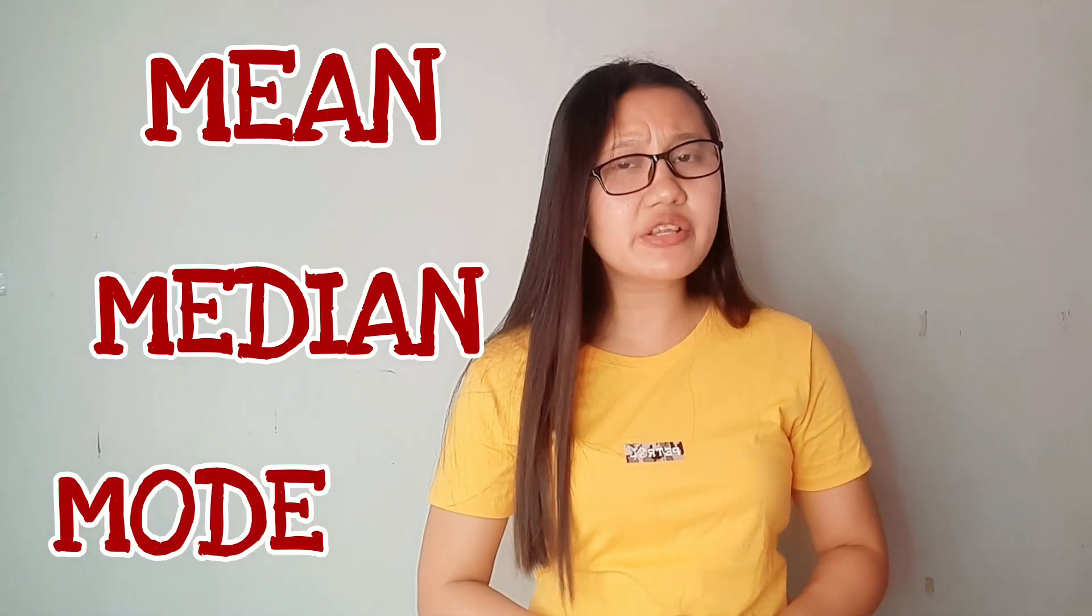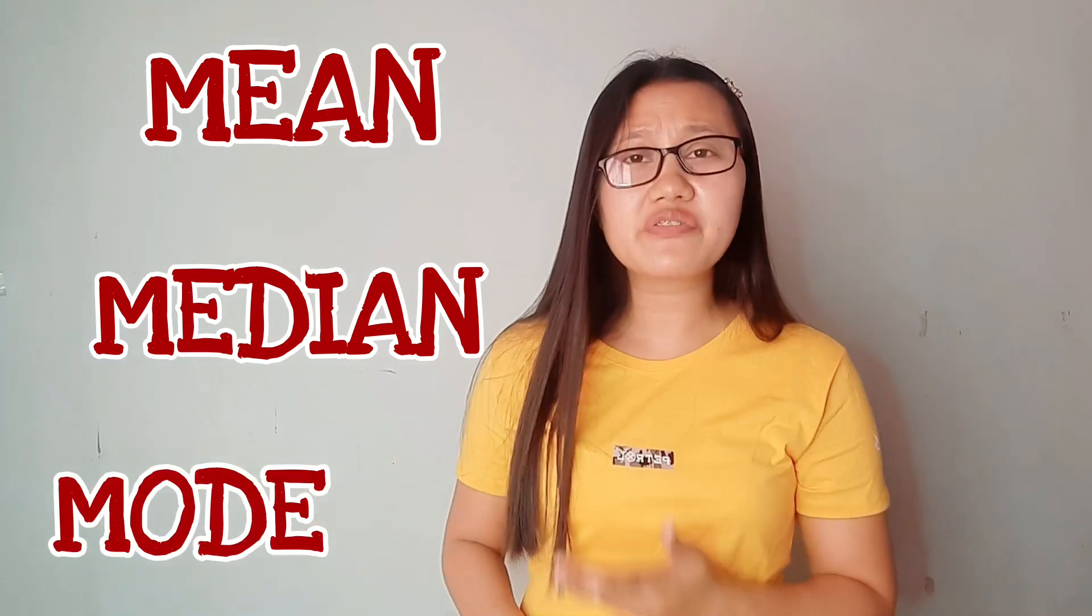Measure of central tendency has three main measures: the mean, the median, and the mode. So, what are the differences among these three main measures of measure of central tendency?